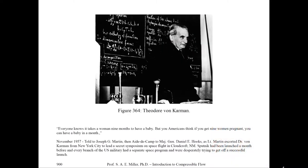I'd like to start with a quote. In figure 364, I show one particular picture of none other than Dr. Theodore von Kármán of Caltech and JPL. And he said, 'Everyone knows it takes a woman nine months to have a baby. But you Americans think if you get nine women pregnant, you can have a baby in a month.' This is a very strange quote. Let's understand its context and why it's related to the method of characteristics.